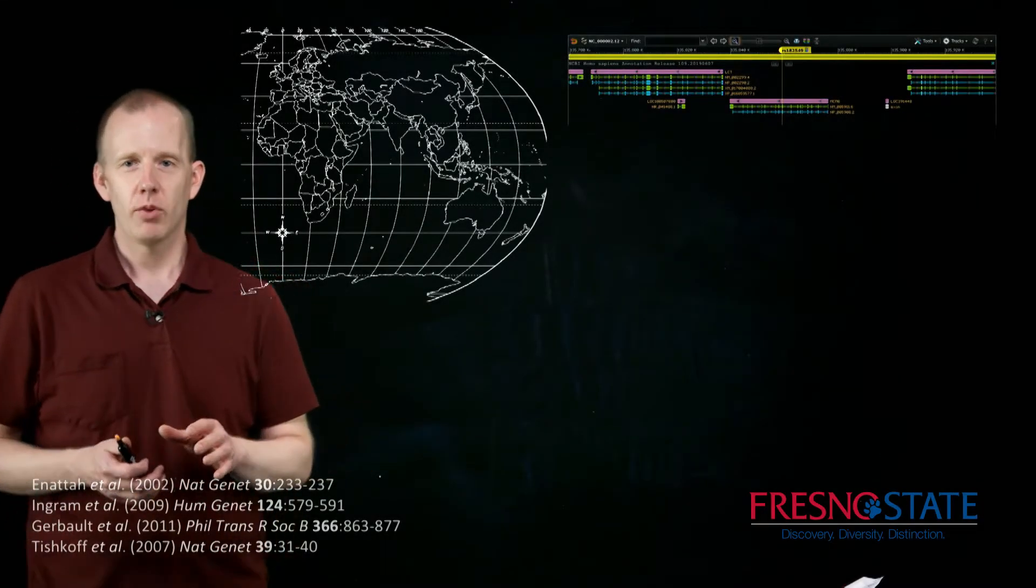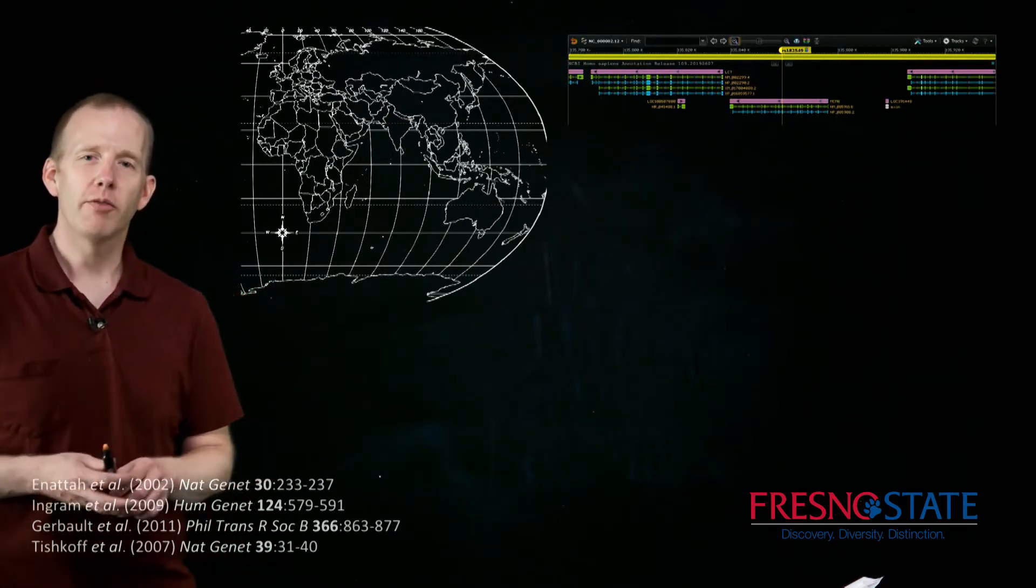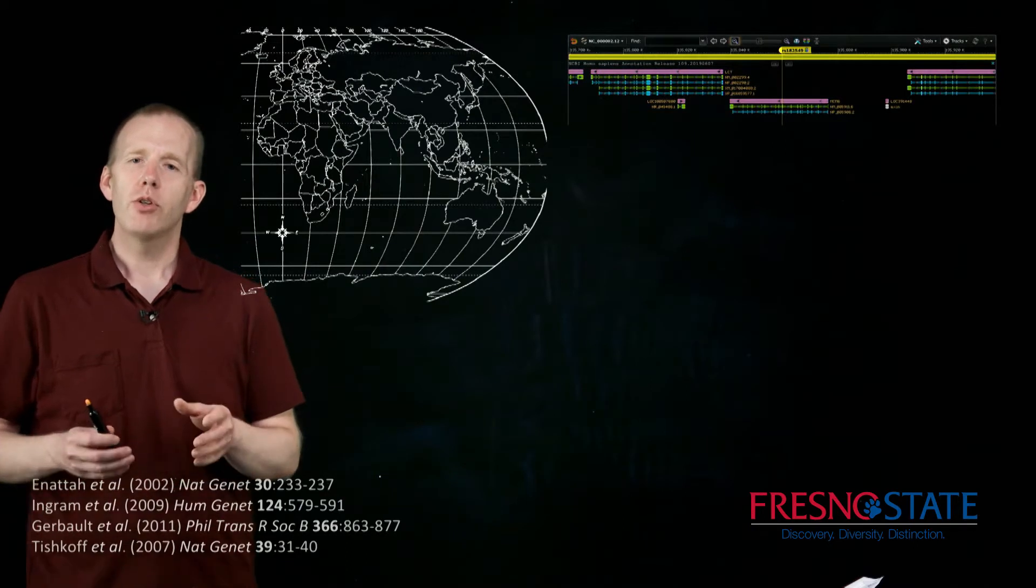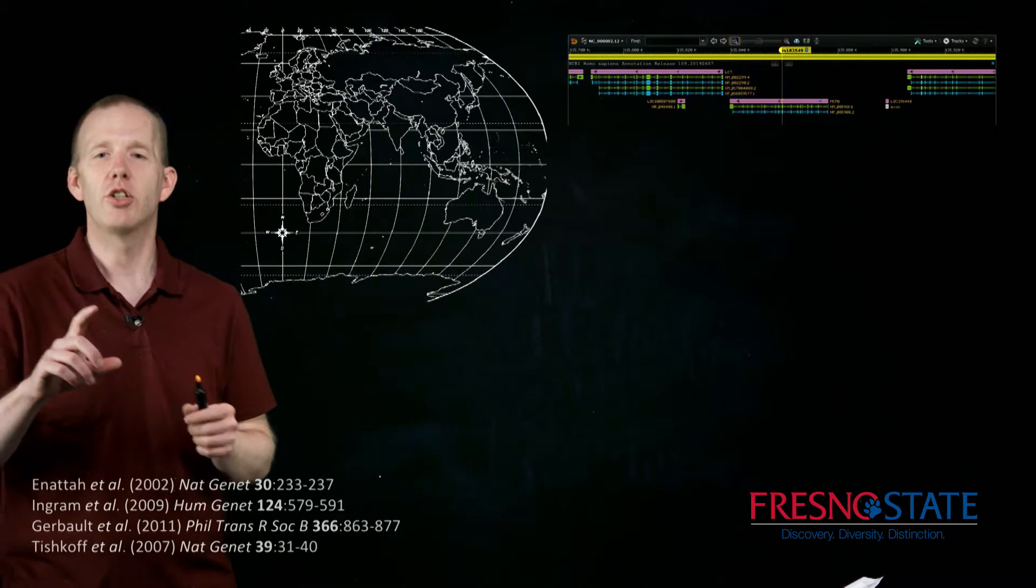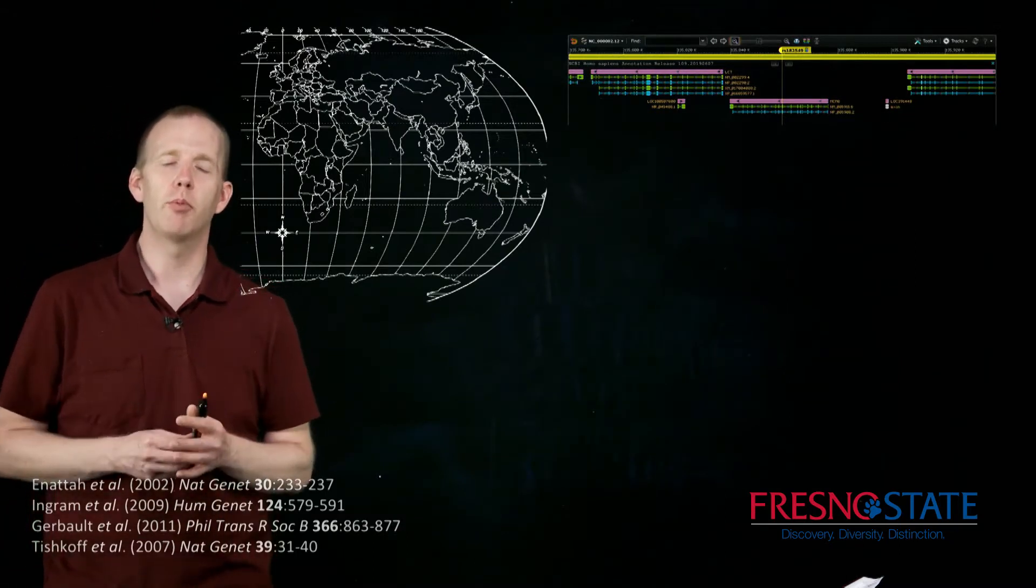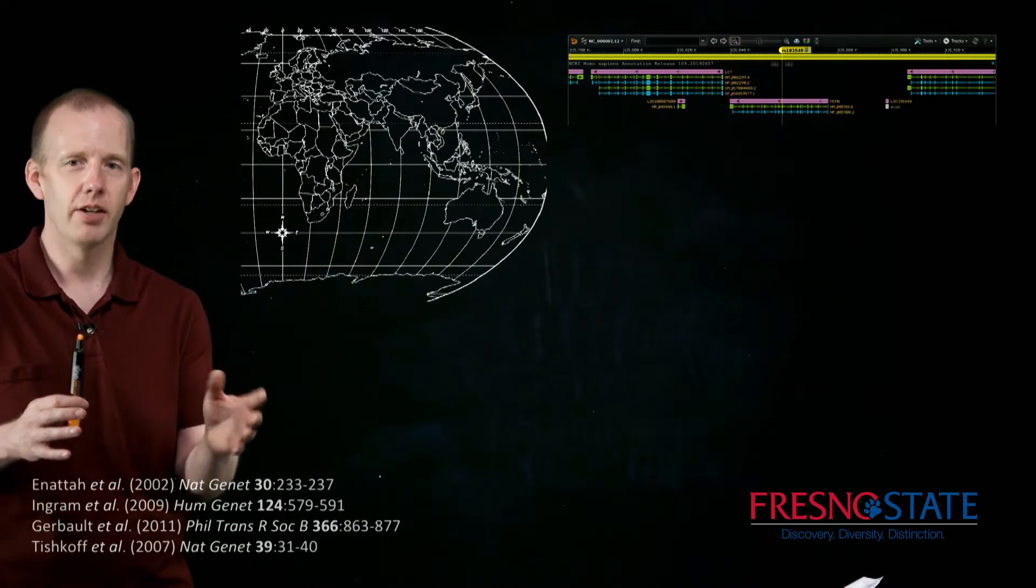After you've had ancestry testing or any sort of genome-wide genetic testing, you can learn some interesting information about yourself. It turns out that not all of those individual differences that are genetic mutations, SNPs, that distinguish human populations, are neutral. That is, they only tell us about our ancestry.